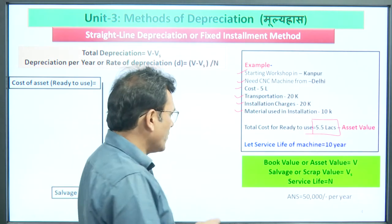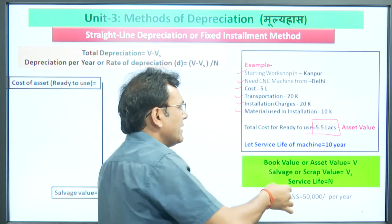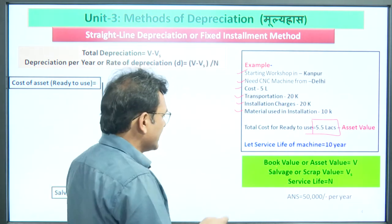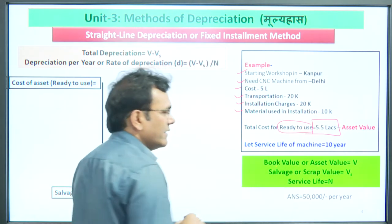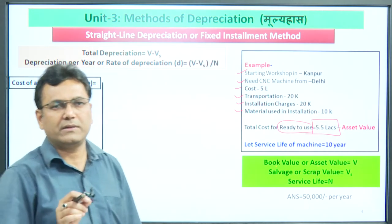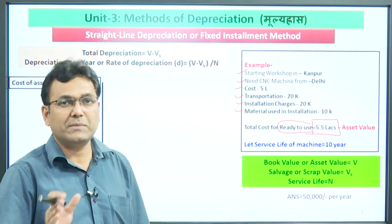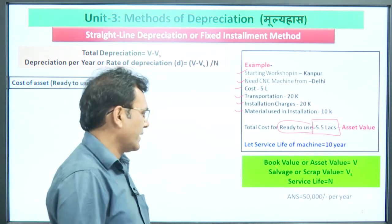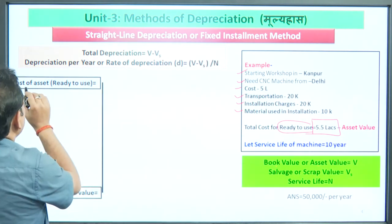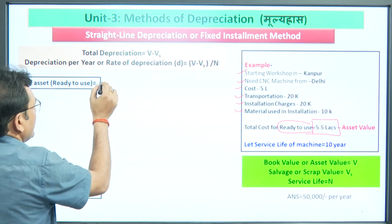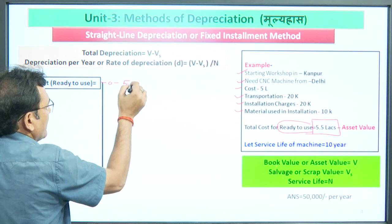The book value means the total cost at the point when the machine is ready to use — you switch it on and it works. So at time zero, when we started, the book value was 5.5 lakh rupees. After 10 years of use, when the service life ended and we sold the machine for 50,000 rupees, that is the salvage value — also called scrap value.